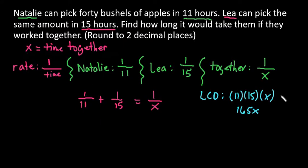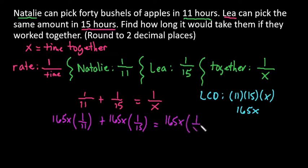So we would go through and multiply every single thing by our lowest common denominator. For the first one, we would do 165x times 1 over 11. For this one, if you remember, 165 is really 11 times 15, so 11 goes into there 15 times - that's what we would be left with. For the second one, the 15 would cancel out, so we would be left with 11x. And for the last one, our x's cancel out, so we would end up with 165.